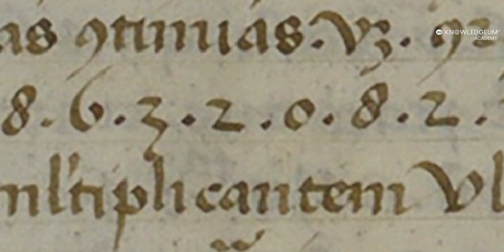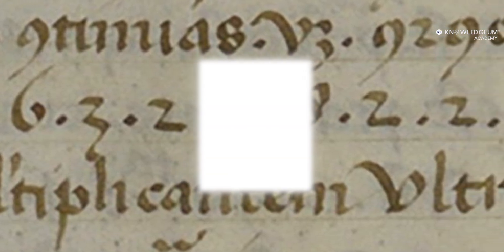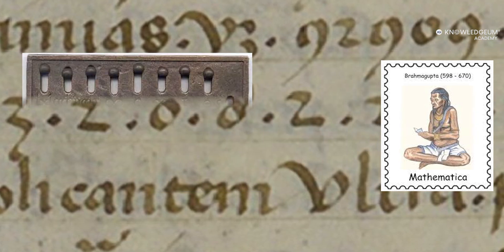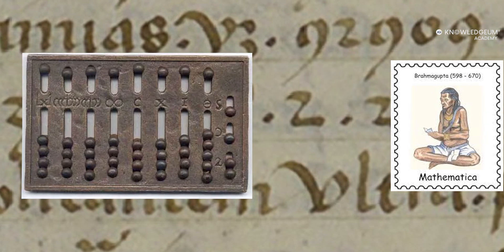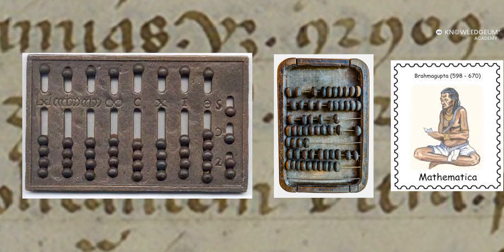So, where did zero come from? Ancient Indian scholars like Brahmagupta are credited with defining zero as both a numeral and a mathematical concept in the 7th century. His work laid the foundation for modern arithmetic.